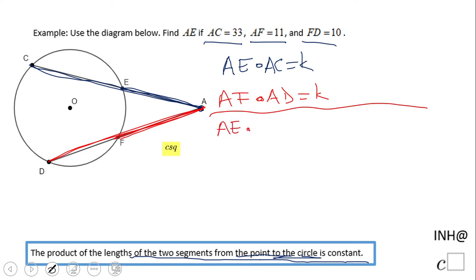AE times AC equals AF times AD. You may want to write this statement which reflects this theorem. And now we're just going to plug the things in.